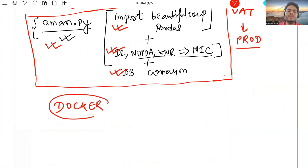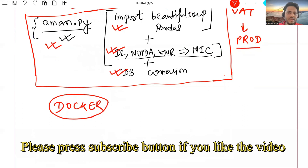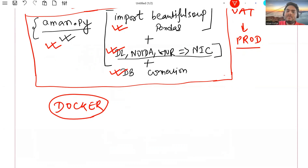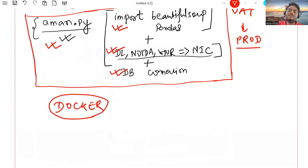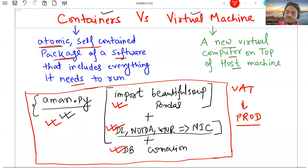What helps you do the containerization is a very famous utility known as Docker. Sometimes people will tell you to create a Docker image of this, or to Dockerize this. It is very similar to somebody telling you to search something on the internet, but people just say 'Google it.' Similarly, I can tell you to containerize your code, or I can just say 'Docker it,' because Docker is such a famous tool in this space. Now you understand what containers and Docker are.